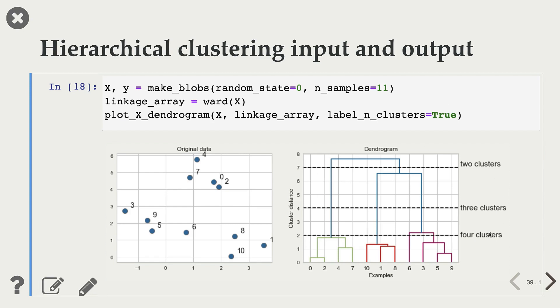How do we interpret this dendrogram? Dendrogram is a tree-like plot. On the x-axis, we have indices for all our examples. On the y-axis, we have cluster distances.